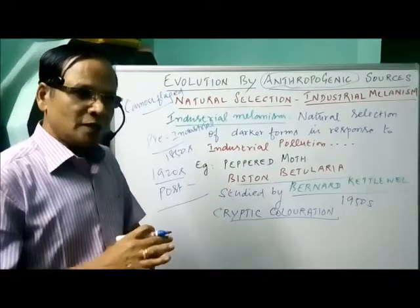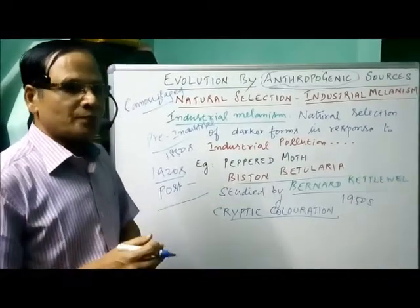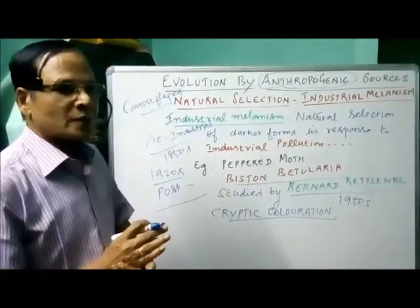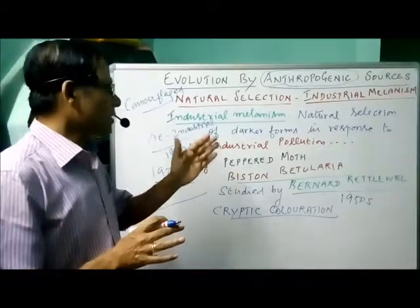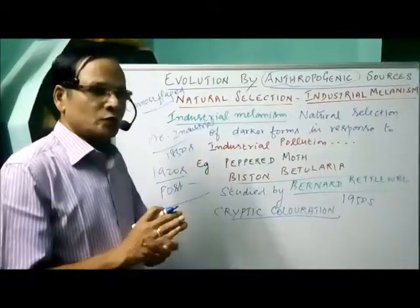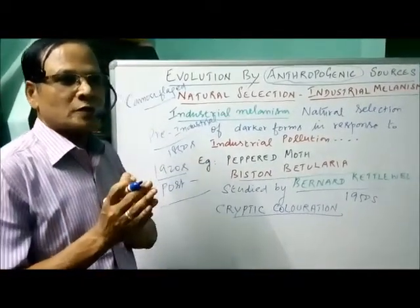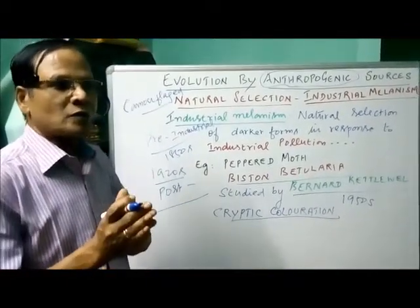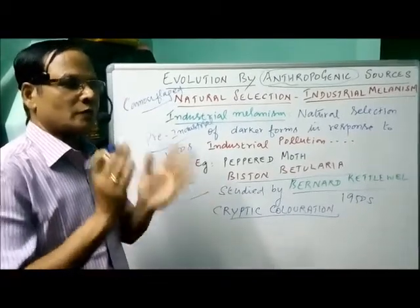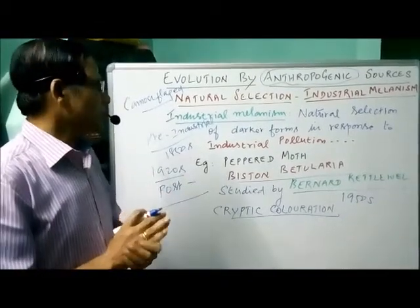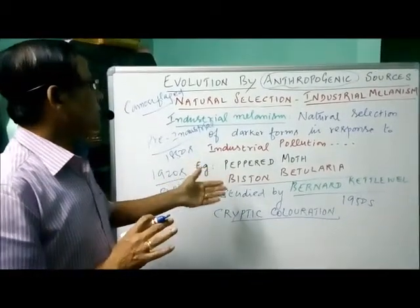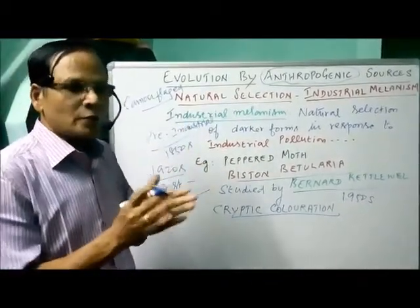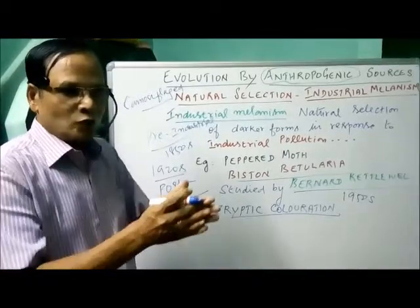Bernard Kettlewell observed that there were more white forms after the 1950s because of the reduction in industries. So it is the environment — nature — that selects the right type of individuals, deciding which are allowed to survive and which are not. This is what we call anthropogenic evolution, because human activities created the industries.